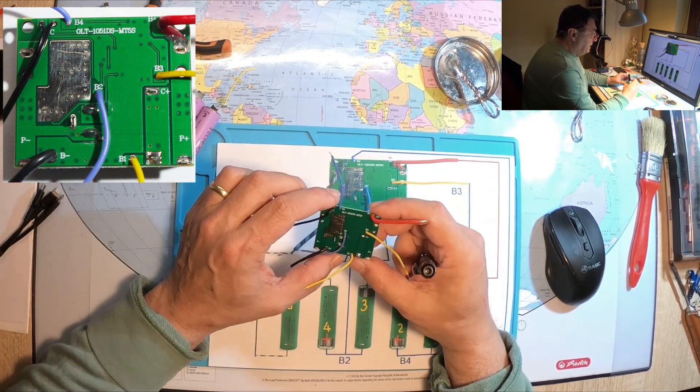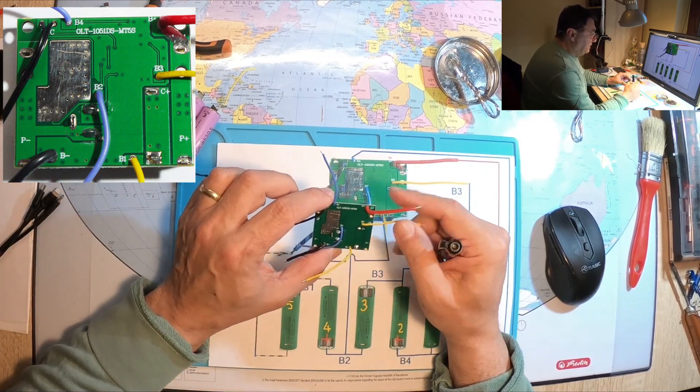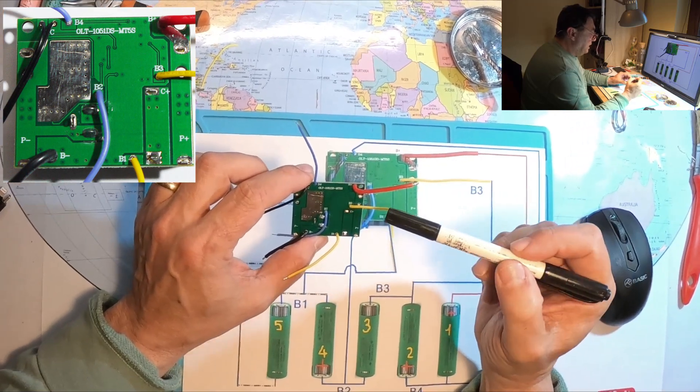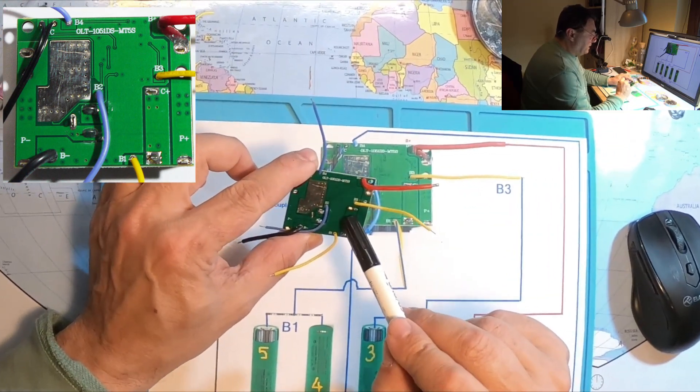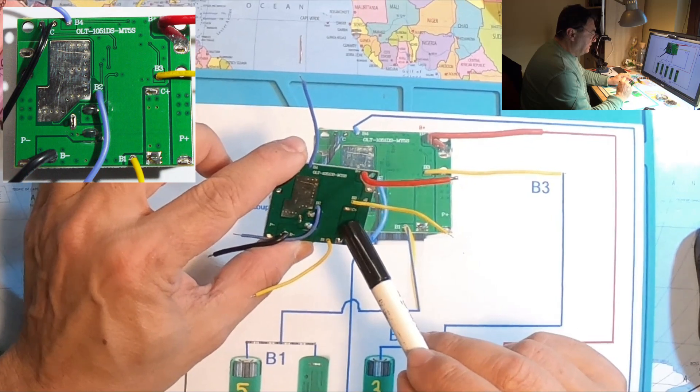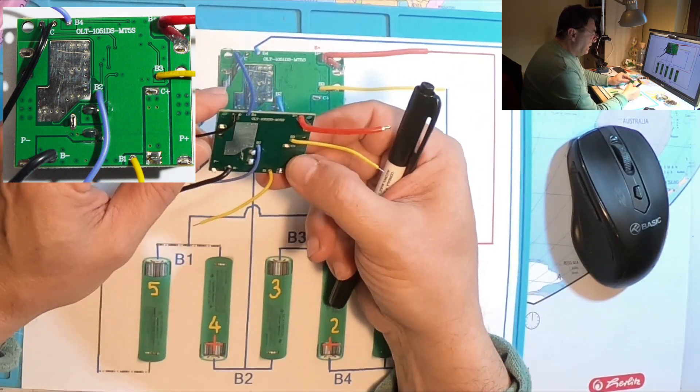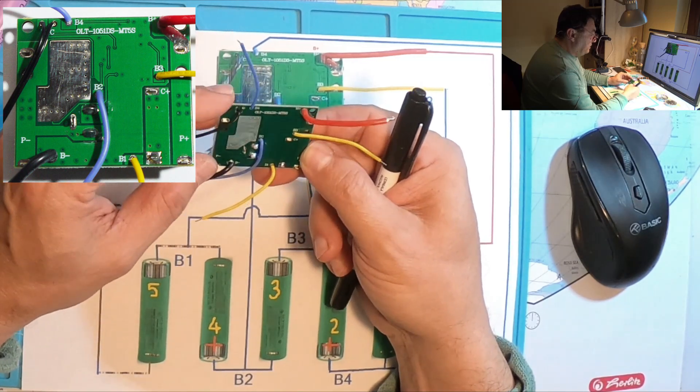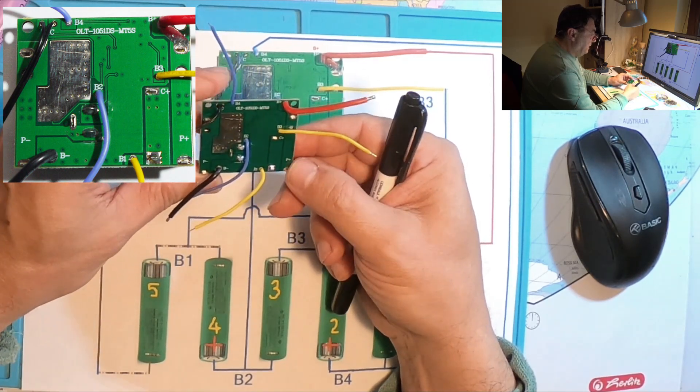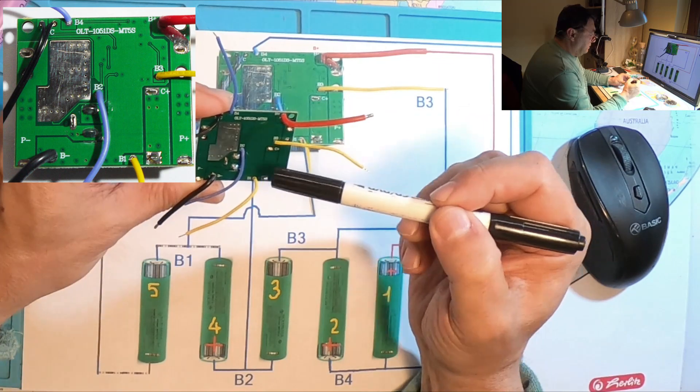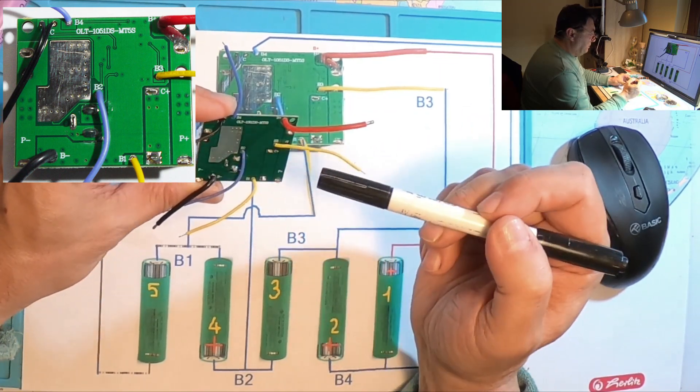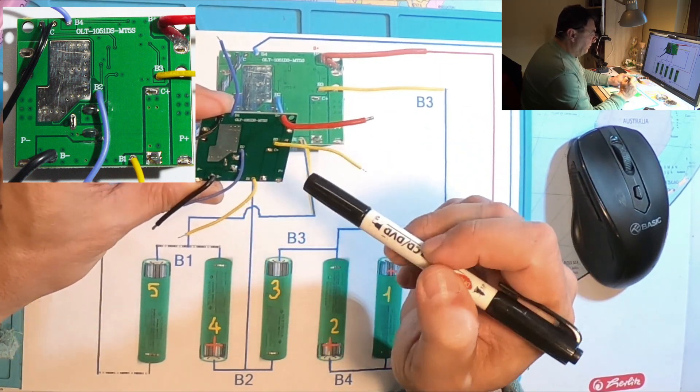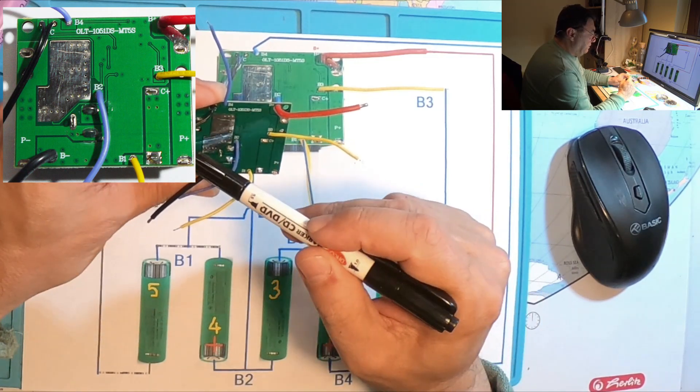What else I should find is where I have to supply the charging. I have a C+, maybe this is the charging plus. Do we have a charging minus? No, but probably it's here on P-.